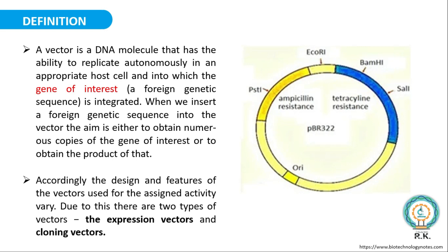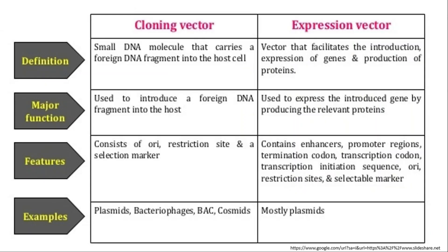According to their design and features, there are two types of vectors: expression vectors and cloning vectors. Cloning vectors are small pieces of DNA which have the ability to introduce a foreign gene of interest into the host cell. An expression vector is a type of vector which not only introduces a gene of interest into a host cell but also aids in the analysis of the foreign gene via relevant protein product expression.